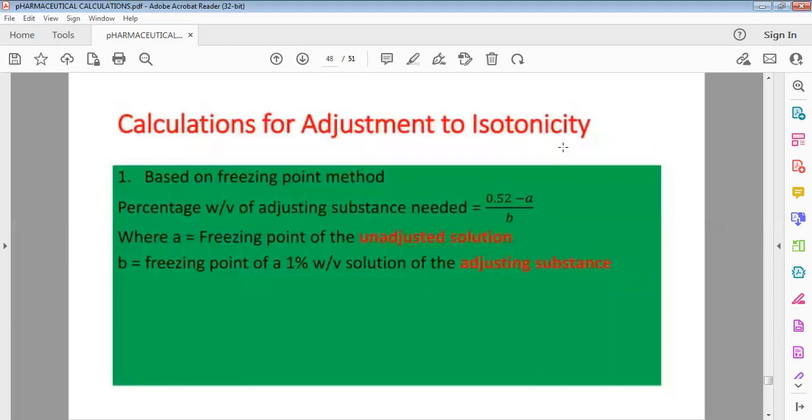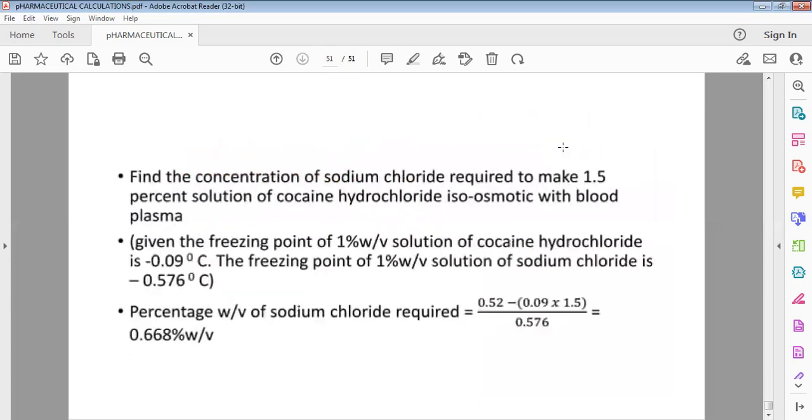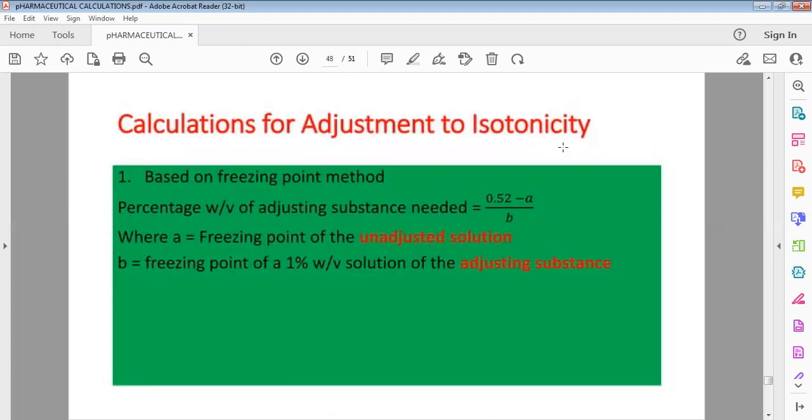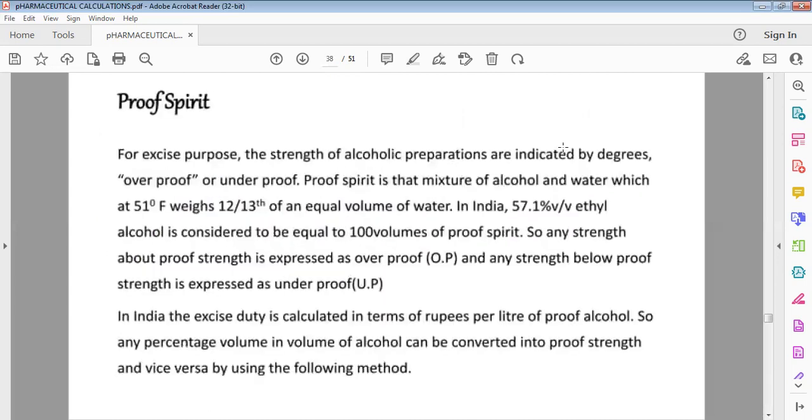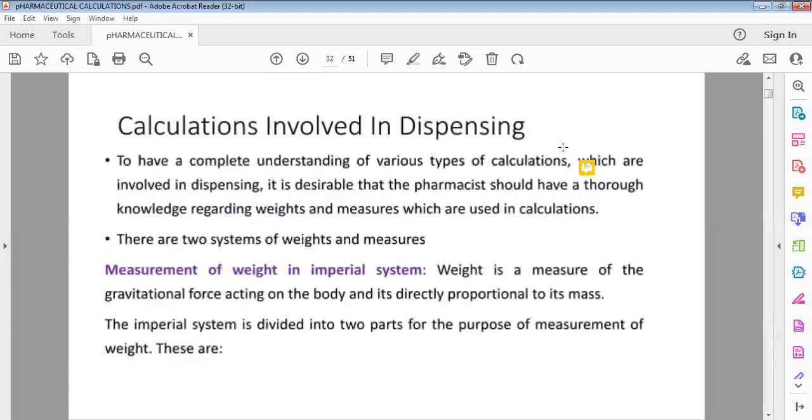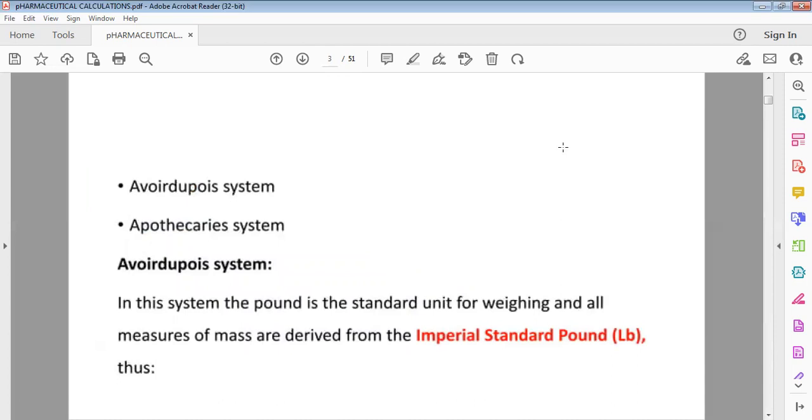Isotonicity is adjusted by calculation using the freezing point method. That's it for the calculation part. For exam purposes, you should know metric system and imperial system conversions, how to use avoirdupois and apothecary systems.